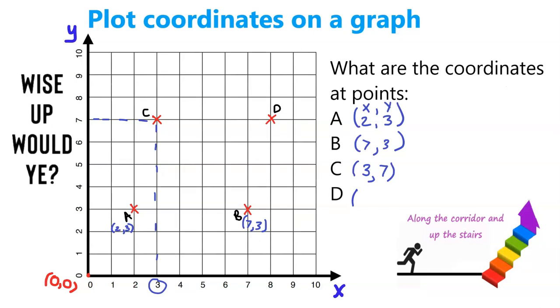And again, quickly, just for point D, we can go across on the x-axis and we'll see that D is at 8. And over on the y-axis, if we go up along, we can see it's at 7: (8, 7). So here we've got each of the coordinates labeled neatly on the graph.